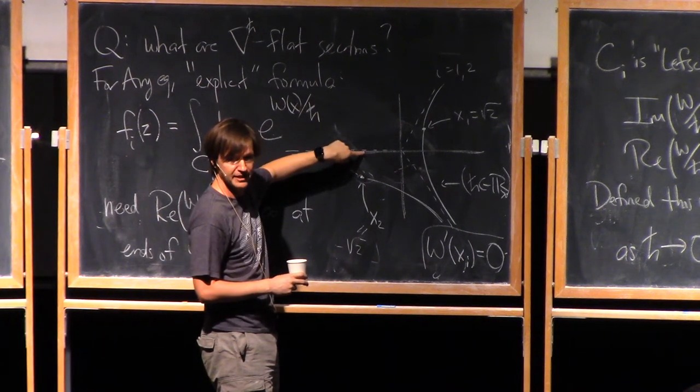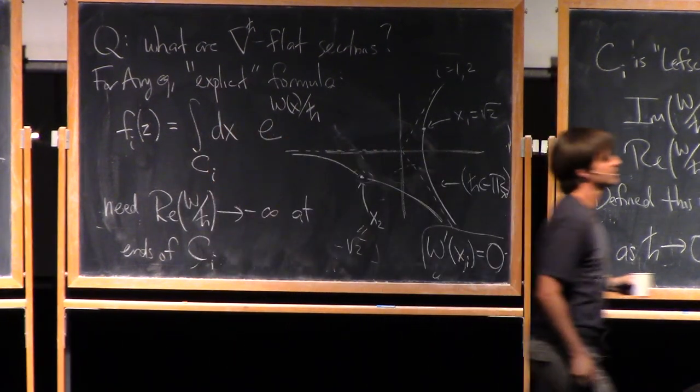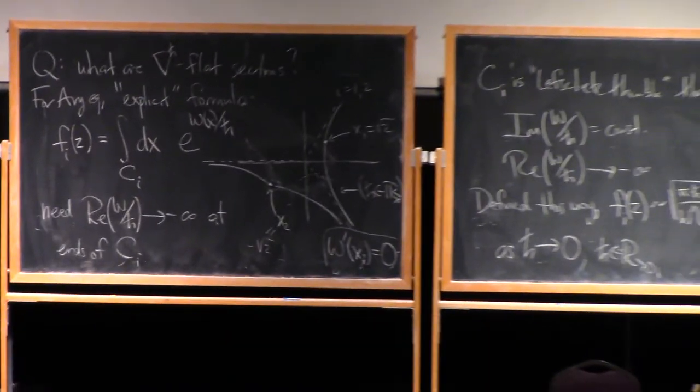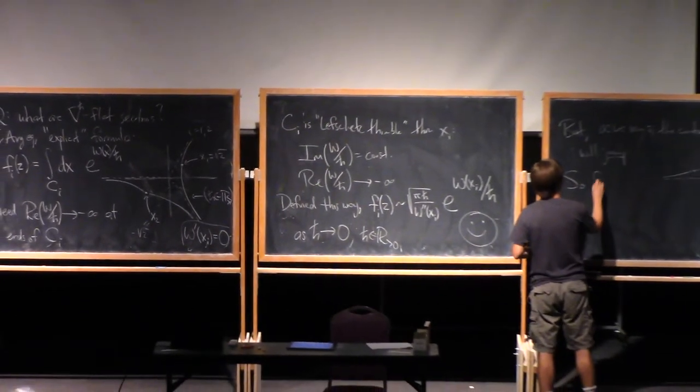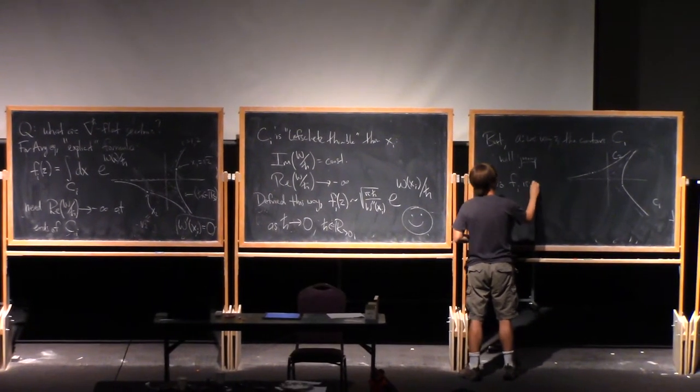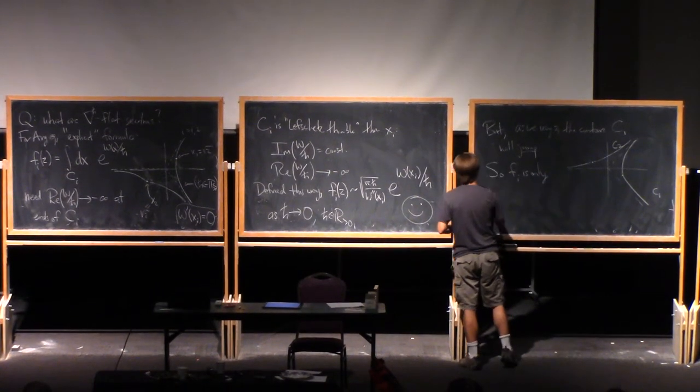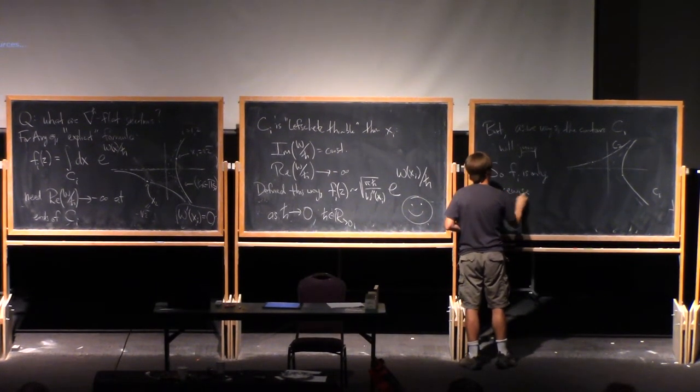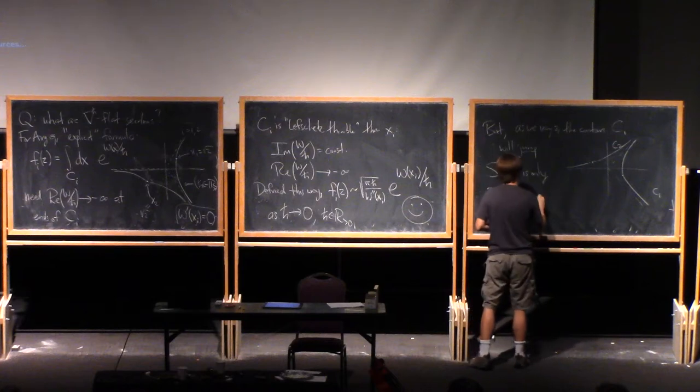When this critical point crosses the real line, so these solutions, fi, are only piecewise continuous.